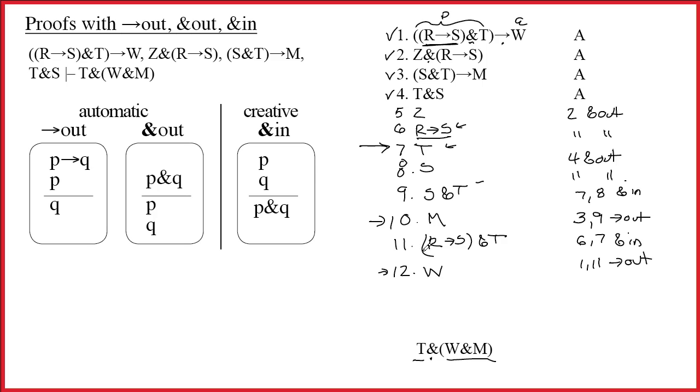Would it be okay for me to take all three of these lines and put them together and just say, well, I'll call this 13 and I'll say 7, 10, 12 ampersand in. And the answer is no. Our ampersand in rule allows you to combine two things at once.